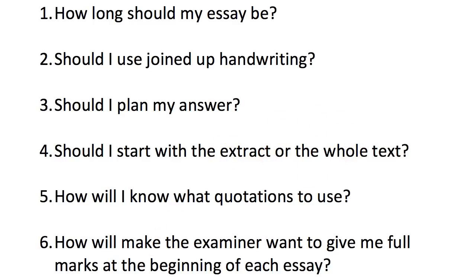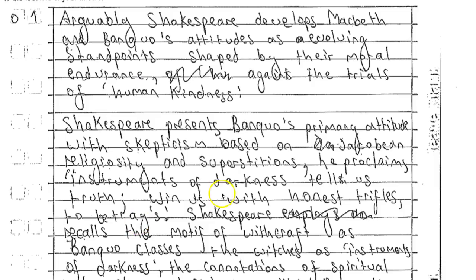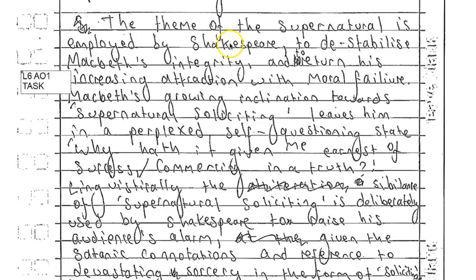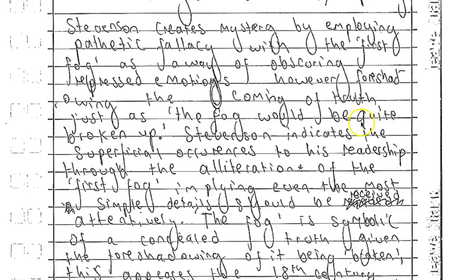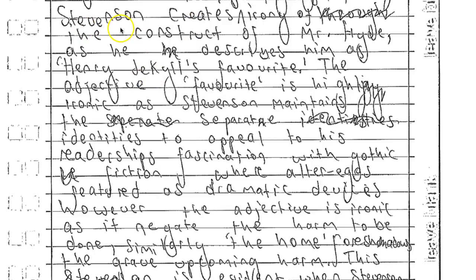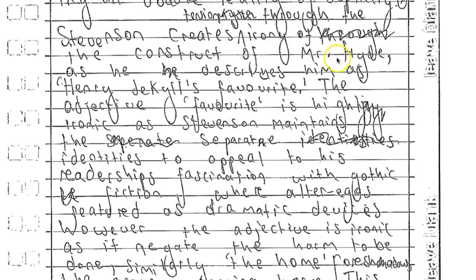How will you know what quotations to use? In the extract question, you find them in the extract itself, then go on to talk about something elsewhere in the novel. For example, on the supernatural theme, the quotation 'why hath it given me earnest of success commencing in the truth' is used. With Jekyll and Hyde, he quotes straight from the extract — 'the fog would be quite broken up' — then goes elsewhere in the novel, noting Stevenson creates tension through the irony of the construct of Mr Hyde as 'Henry Jekyll's favourite'.